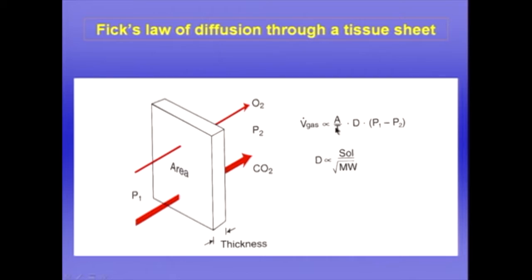It also has a very large area — in fact the area of the blood gas barrier in the human lung is about 50 to 100 square meters. Now I like to think of the lung as a symmetrical organ, with the blood gas barrier in the middle, air coming in from one side via ventilation and blood coming in from the other side via the pulmonary circulation.